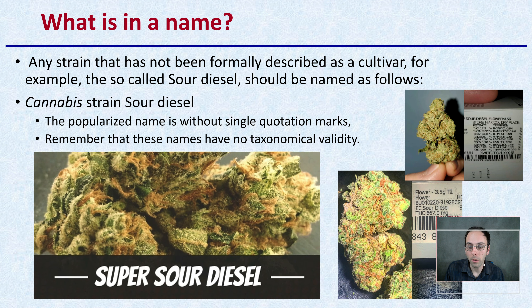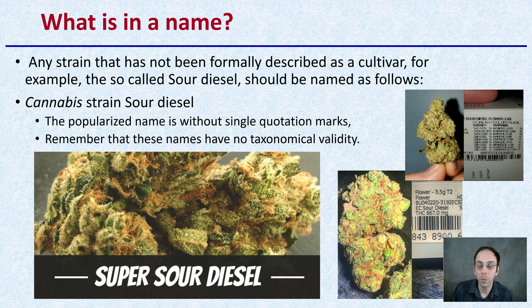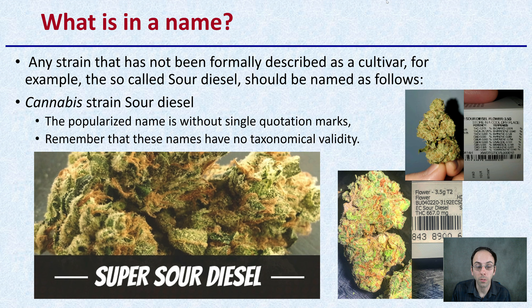What's in a name? Any strain has not been formally described as a cultivar. For example, the so-called Sour Diesel should properly be named as Cannabis (in italics) strain Sour Diesel — the popular name is without single quotation marks. Remember that these names have no taxonomic validity. Just because you may know it as Sour Diesel or it may be listed on the package as Sour Diesel, these names really don't have any true taxonomic or scientific validity.